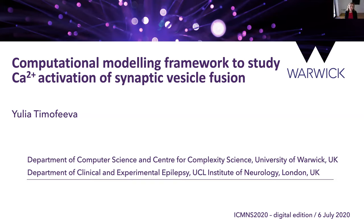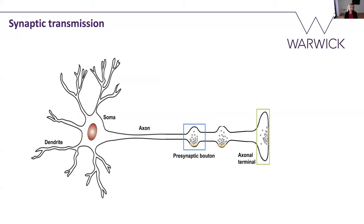Thank you very much to the organizers for inviting me to give this talk. It's a really new experience and I really enjoyed the first part of today. I'm going to focus on the single cell — specifically the presynaptic bouton — and synaptic transmission will be my main focus. In many parts of the central nervous system these presynaptic boutons are quite small, about one micron in diameter, which imposes limitations on experimental methods.